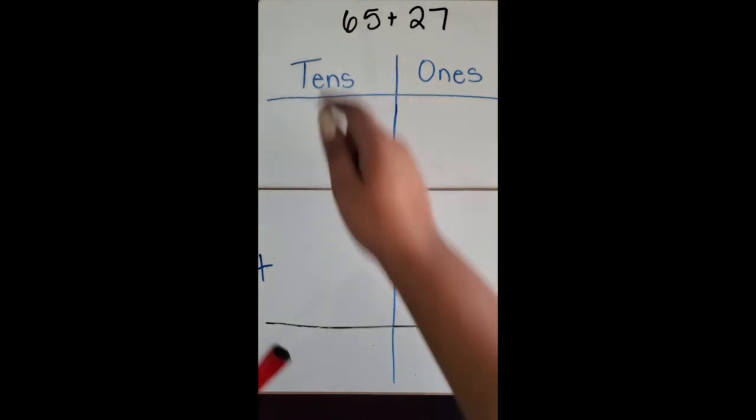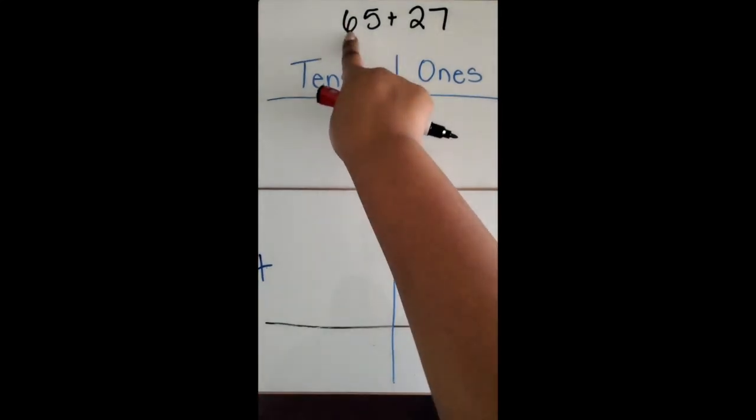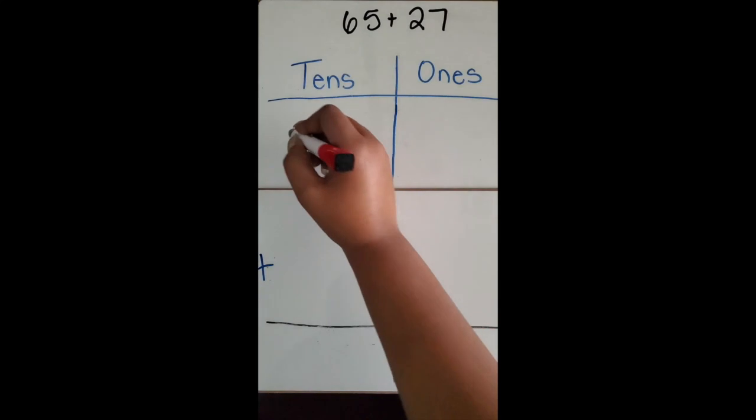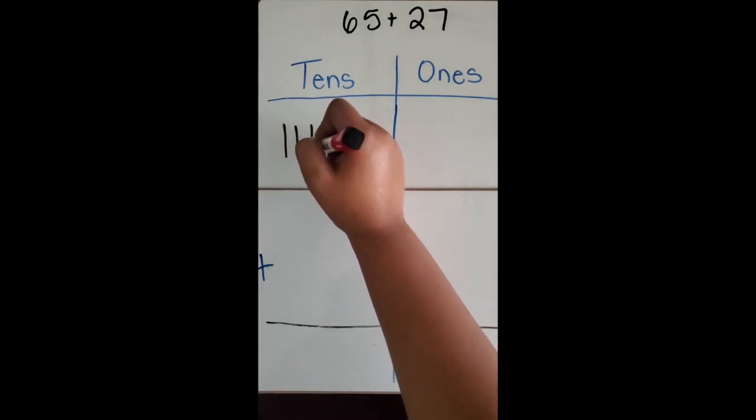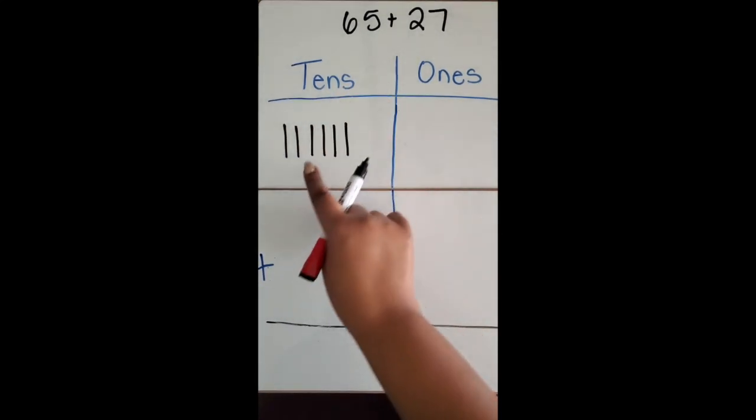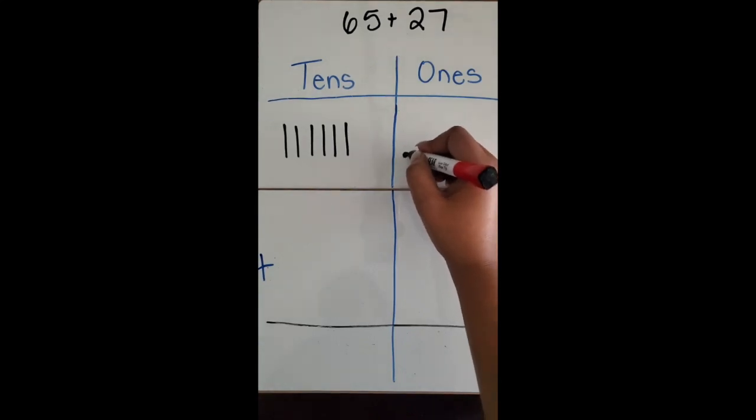I'm going to start by drawing the first number. 65 has six tens and five ones, so I'm going to draw six tally marks to represent the tens and then five ones.